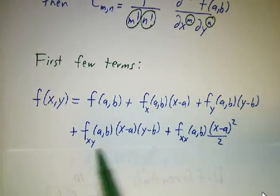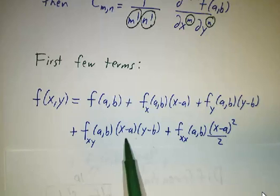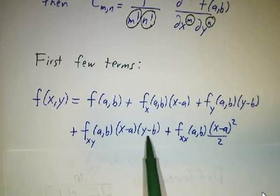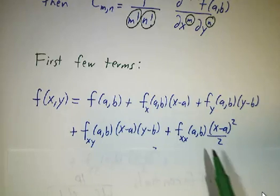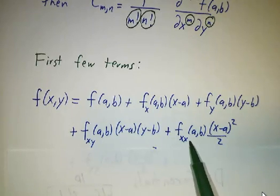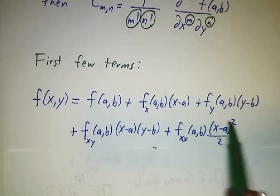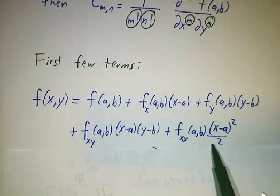f_xy gives you a cross term. There is an interaction between changes in x and changes in y. And f_xy measures how big that is. Then you get an f_xx. This is the term that you would have had in your Taylor series anyway, if you just had a function of x.